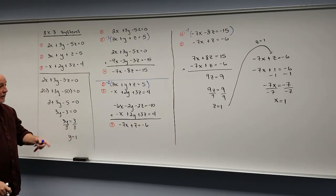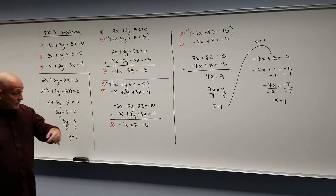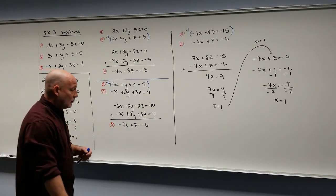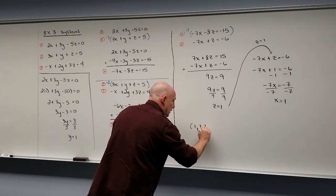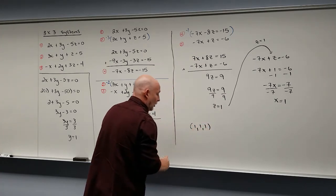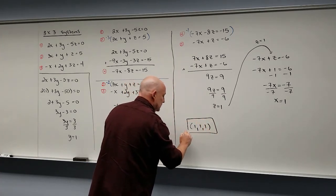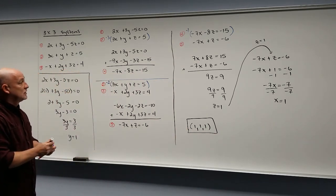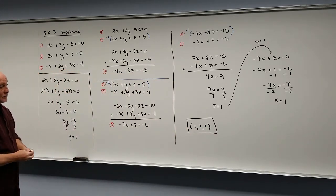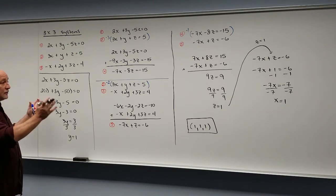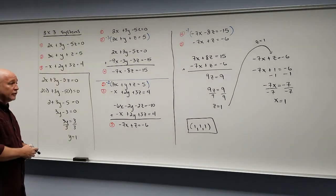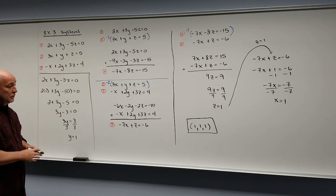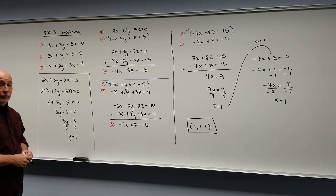Now that we have our three values, our answer is always given as an ordered triplet: x, y, z. So our answer is the point (1, 1, 1). Since this system had a solution, it's considered a consistent system. 3 by 3 systems are a little bit more work — just follow your steps and make sure you don't get lost when working through them.